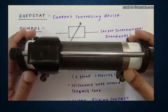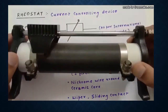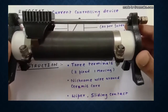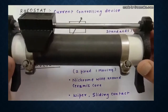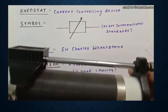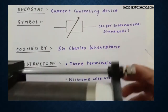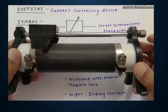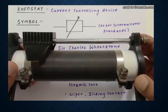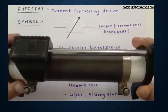Today I'm going to talk about a very interesting electrical device generally used till grade 12 — the rheostat. Rheostat itself is a very interesting instrument and is sometimes called a variable resistor. Let us understand its principle and construction.